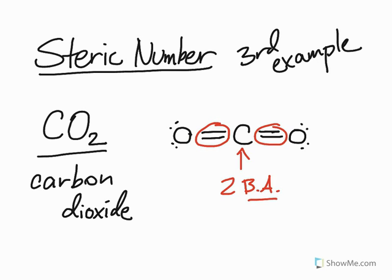Again, one more time, a bonding area is an area where there are bonds. There are bonds that may be single, there may be double bonds, there may be triple bonds. But each one of these is only equal to one bonding area.